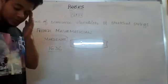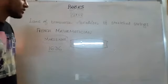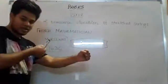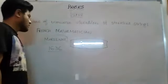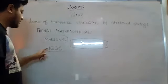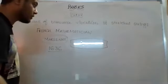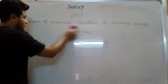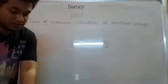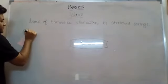At the end of the last class we said we are going to discuss the laws of transverse vibration of a stretched string. It was invented by a French mathematician Mersenne in the year 1636. He invented three laws. I will not write the statements because they are already written in your book - I will just explain what they mean. First we have the Law of Length.